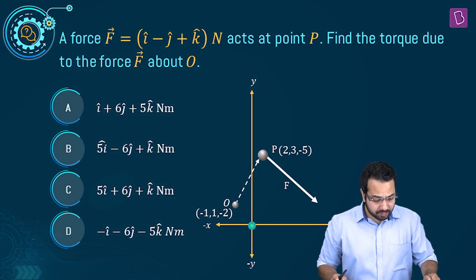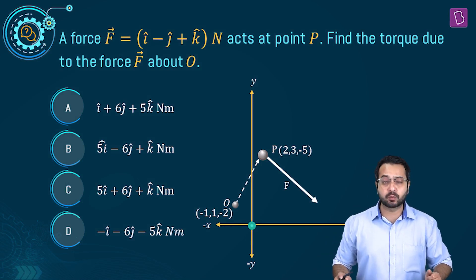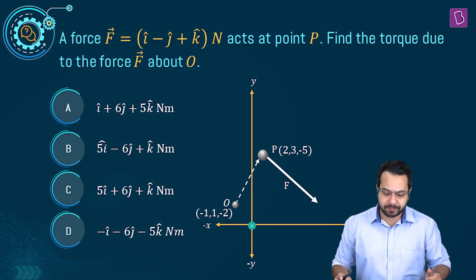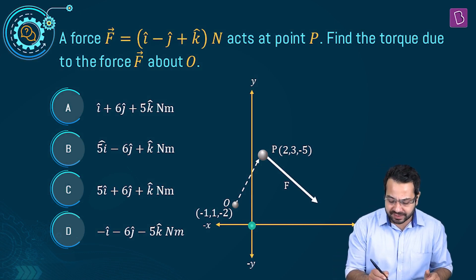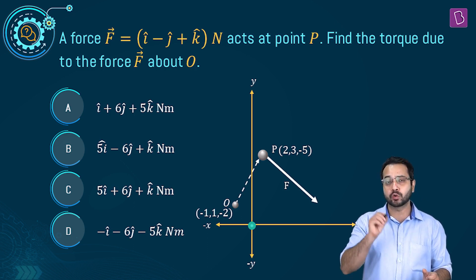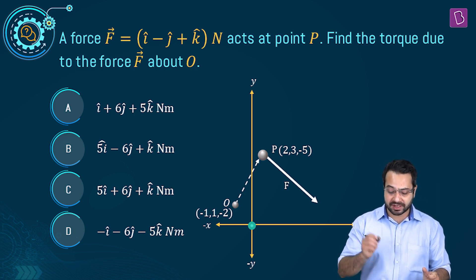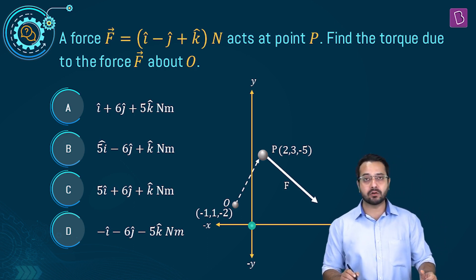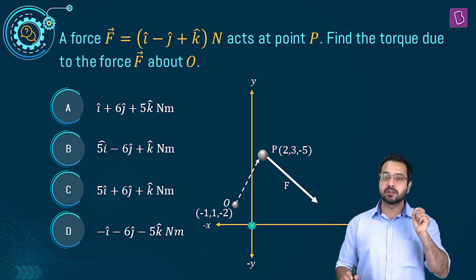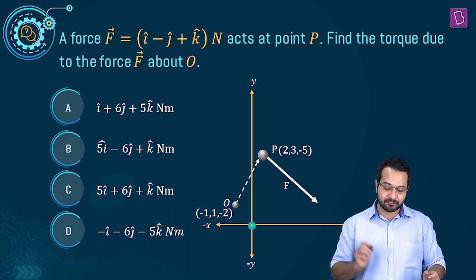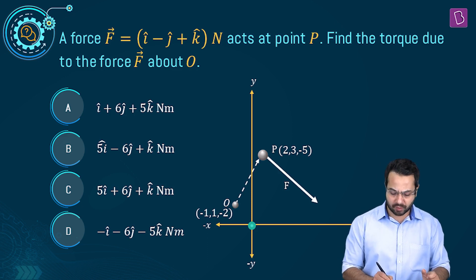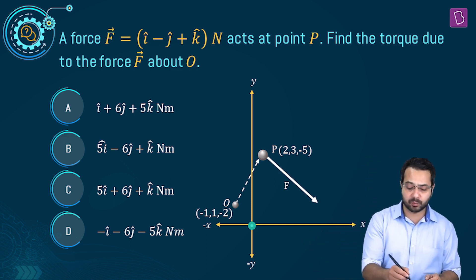The next question: a force F equal to i minus j plus k acts at point P. Find the torque due to the force about point O. The force F is acting at point P whose coordinates are (2, 3, minus 5), and we have to find the torque about point O whose coordinates are (minus 1, 1, minus 2).